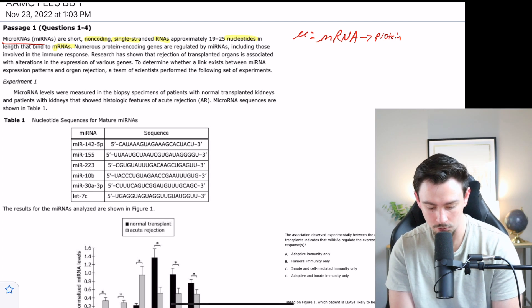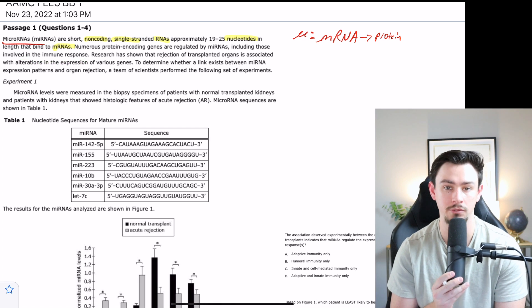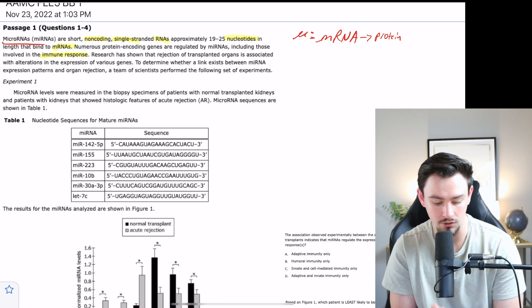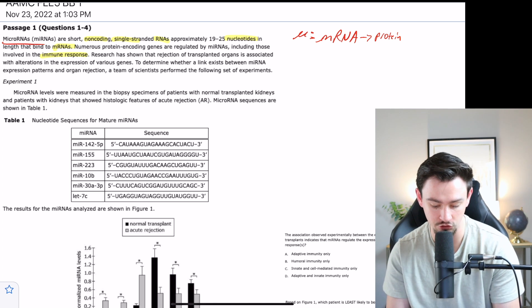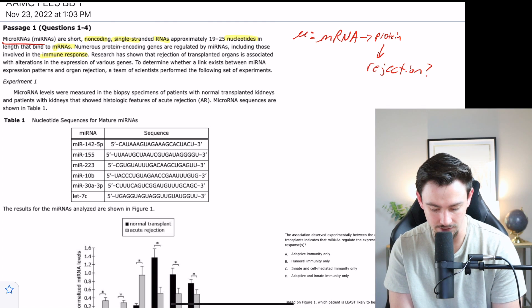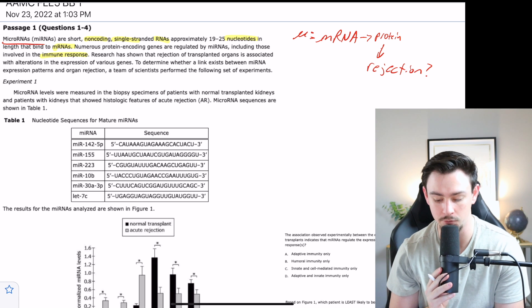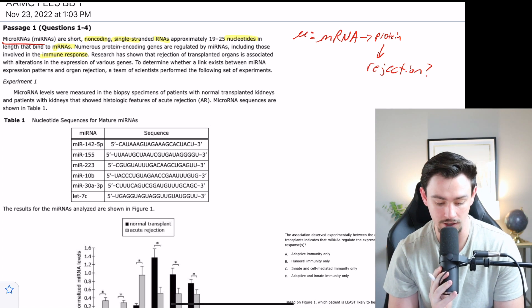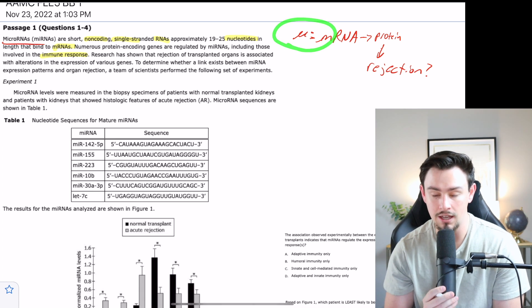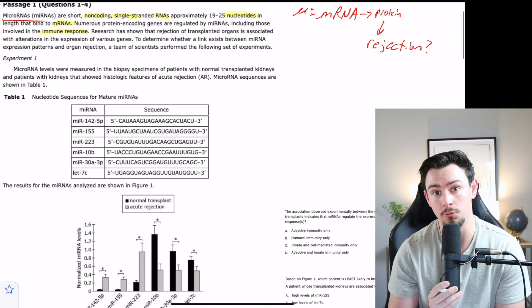One of the relationships is it's telling us exactly what this microRNA is. What they tell us here is that it binds to the mRNA, and a colon's my symbol for binding. So it binds to the mRNA, and then it leads to protein expression. It says numerous protein-encoding genes are regulated by mRNAs, including those involved in the immune system. Research has shown that rejection of transplanted organs is associated with alterations in the expression of various genes.